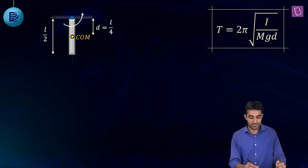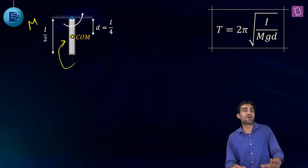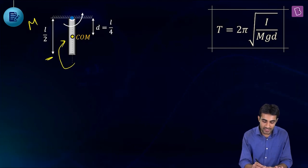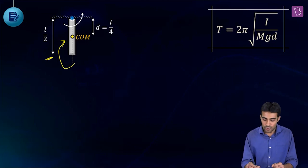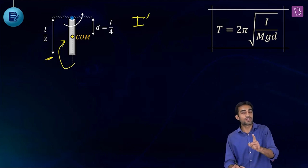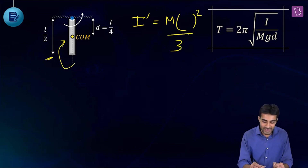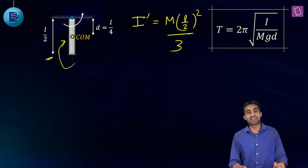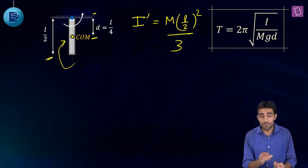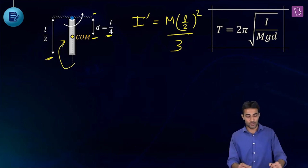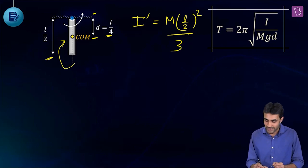In the second case, the bottom half is cut and glued to the upper half. Mass remains m, but total length is now L/2. The new moment of inertia is I' = m(L/2)²/3 = mL²/12, and the new distance from suspension to center of mass is d' = L/4.